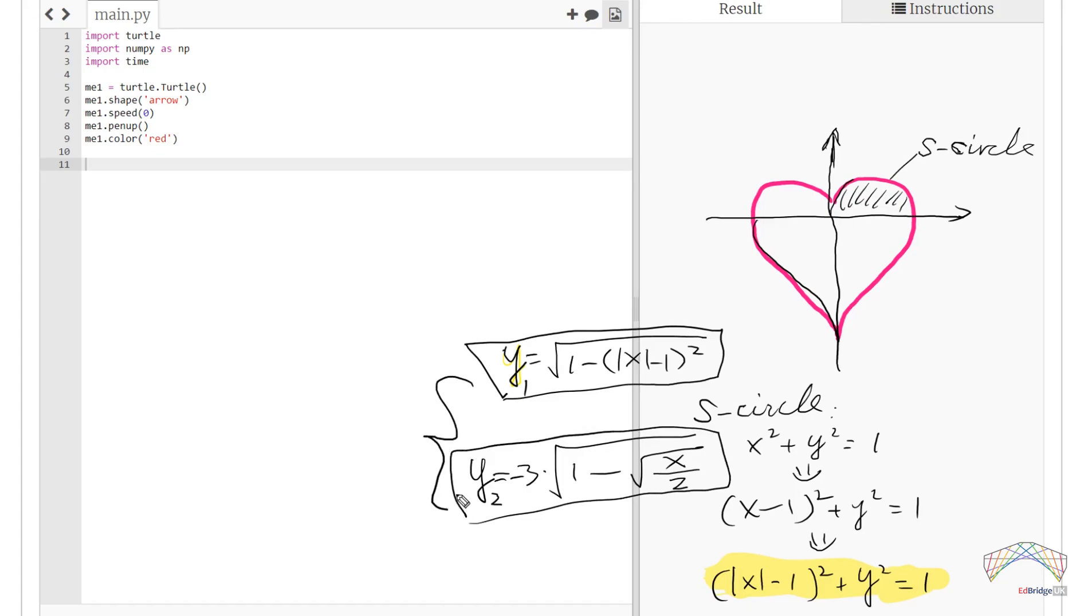It's time to code them up. In Python, we call the first function f1 of x. And it returns, firstly, the square root of something, where the something is 1 minus something else, where something else is the square of absolute (x minus 1).